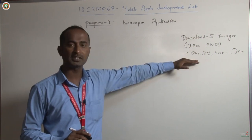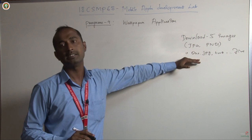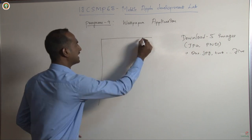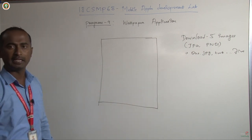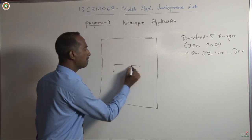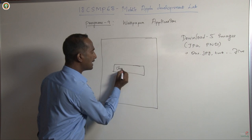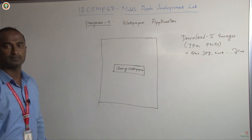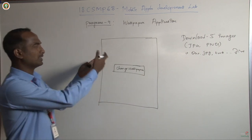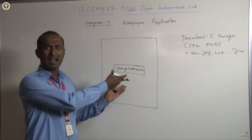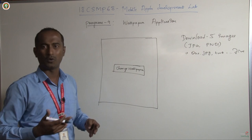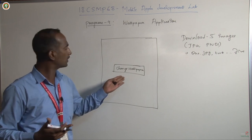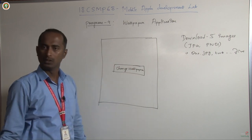Once after downloading 5 images, rename those images as 1, 2, 3, 4, 5 and place them inside the drawable folder. The design is very simple. Inside the activity, I am going to place a button renamed as 'Change Wallpaper'. You can go with constraint layout or relative layout since we are adding only one button.